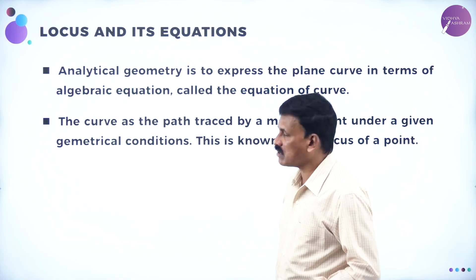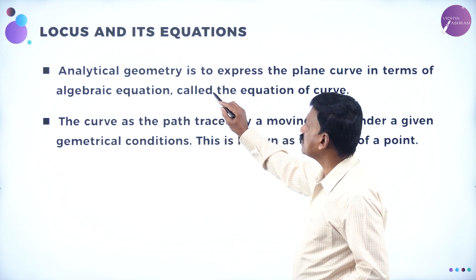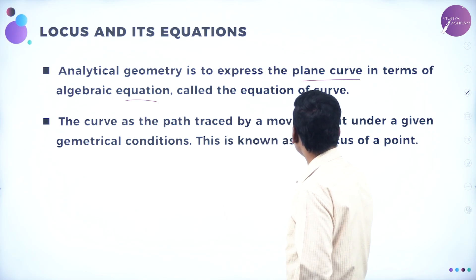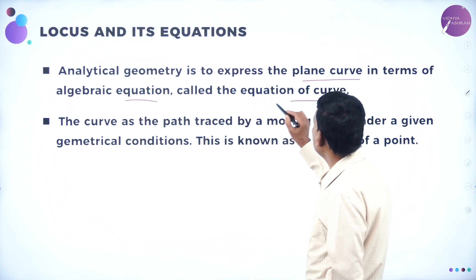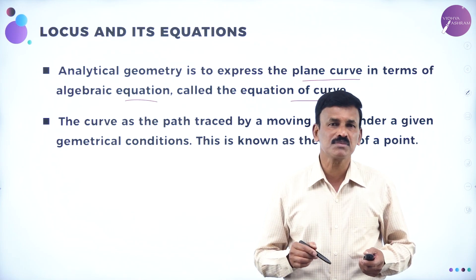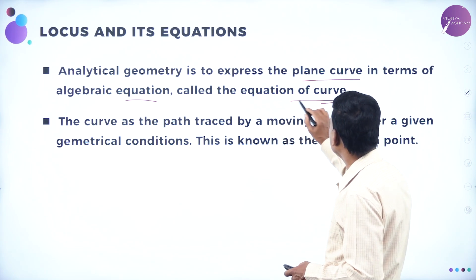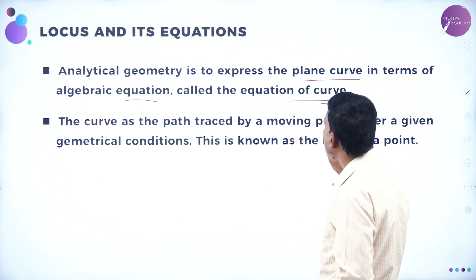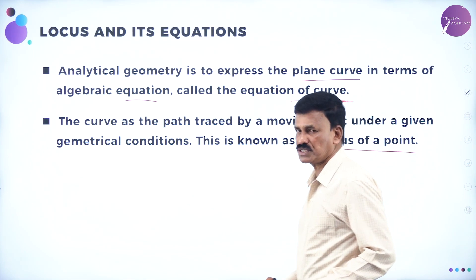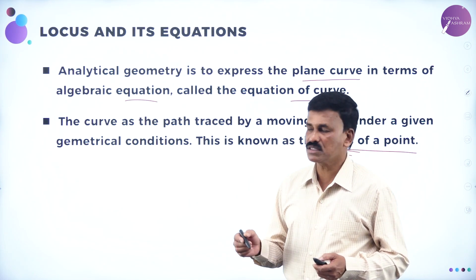Now let us move to the concept. In analytical geometry, we express the plane curve in terms of an algebraic equation called the equation of the curve. The curve as the path travelled by a moving point under a given geometrical condition is known as the locus of a point. So for a definition: the path travelled by a point under certain geometrical conditions is called the locus.